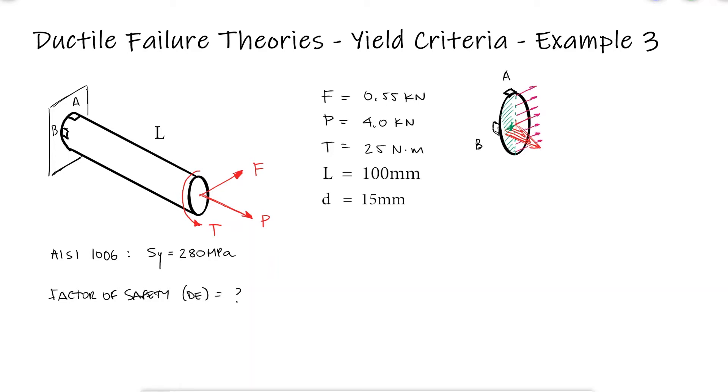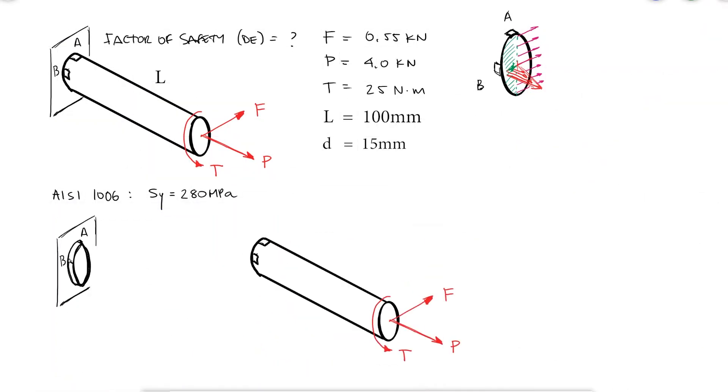We will later learn that for long elements like this, the bending stress will always be way higher than the transverse shear stress, so stress element B will be the critical stress to study.